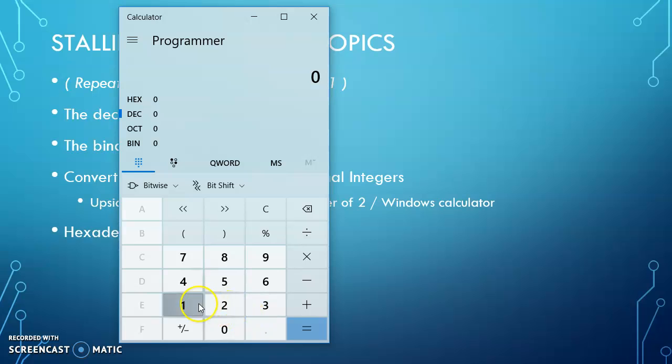So if I put in 137, then I can see the underlying binary, the underlying hex for the same number. So it's a way of double-checking our work.